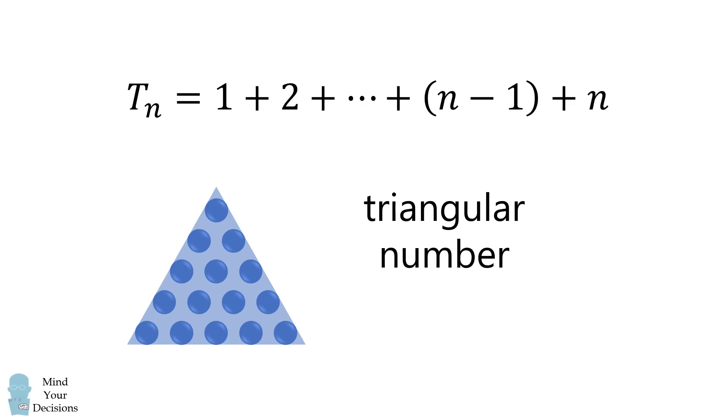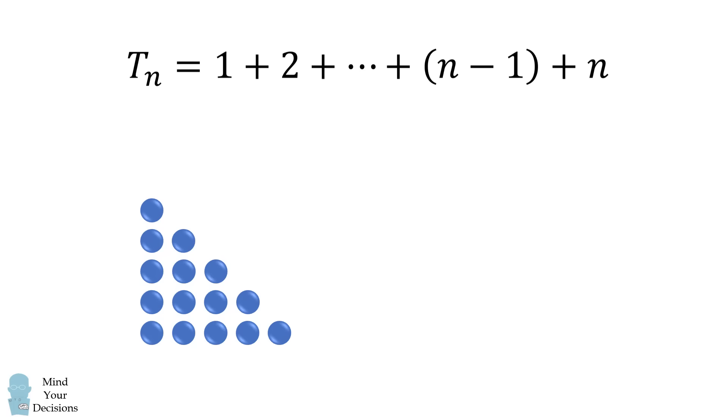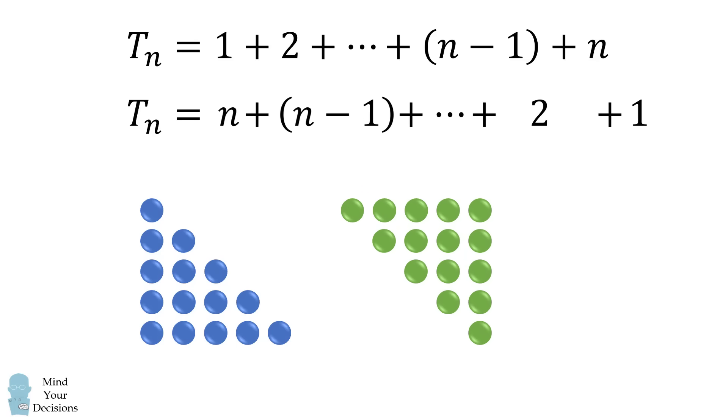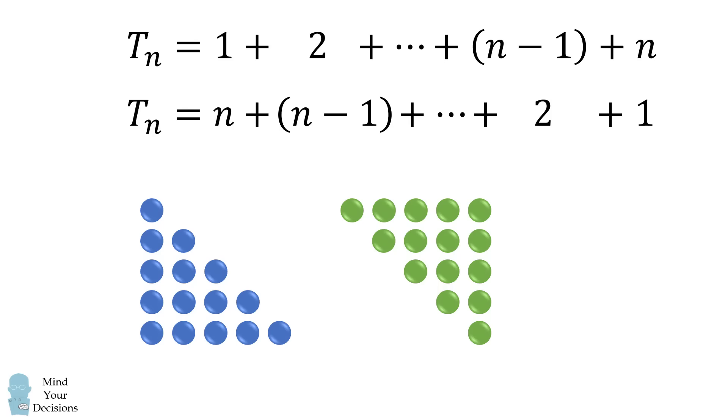We can solve a formula for tn in terms of n in the following clever way. We'll first arrange the dots in a right triangle. We will then add a copy of tn to itself. We will then rotate this triangular grid as shown, which will be equivalent to taking the sum in descending order, going from n to 1. We can then combine the two sums together.